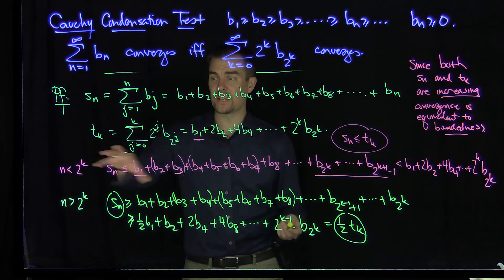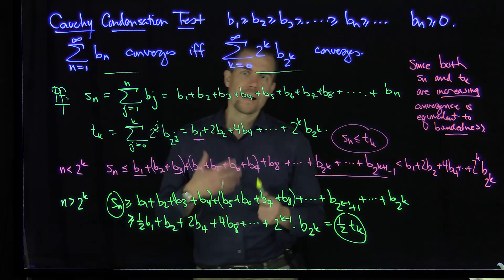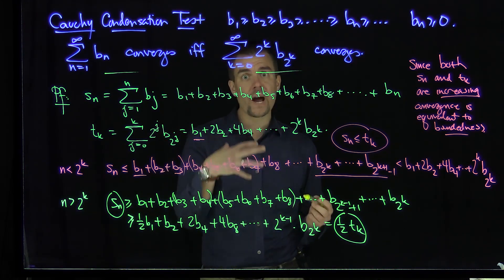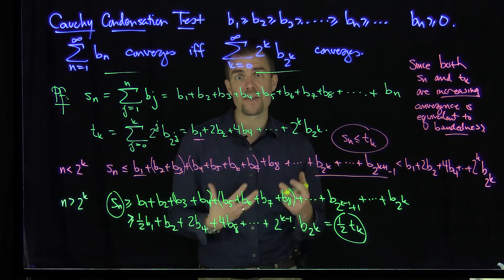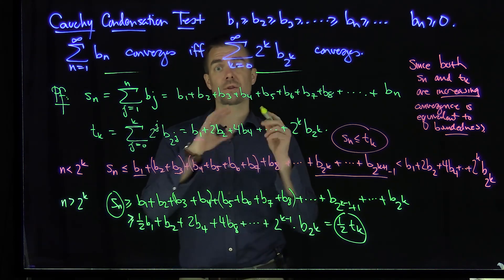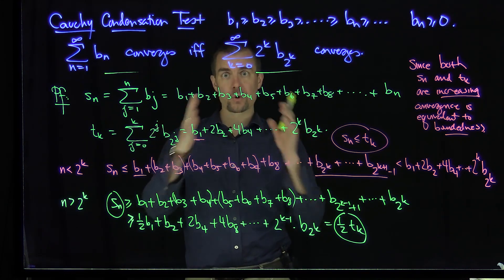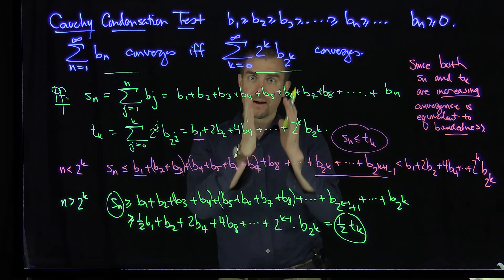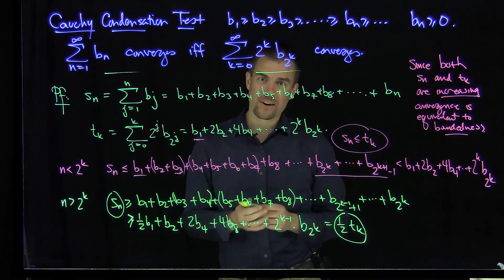So in either case, I have two estimates in either regime for n. And so in each case, we see that if one series converges, then the other series converges. So to check, if you have a decreasing sequence of non-negative numbers, you can check the convergence of that series by checking the convergence of the corresponding dyadic chunk series, where you're estimating them based on the size of the dyadic chunk times the end point of the sequence on that dyadic chunk. Thank you very much.